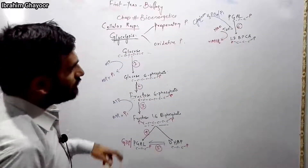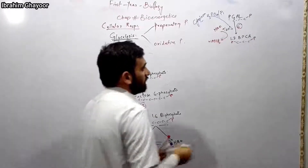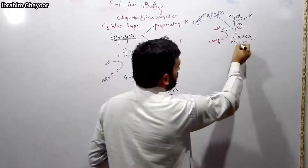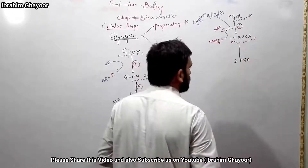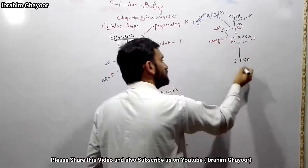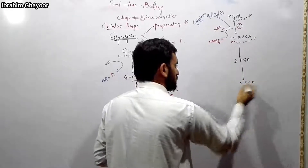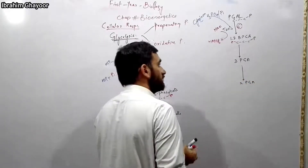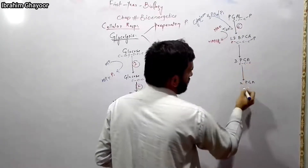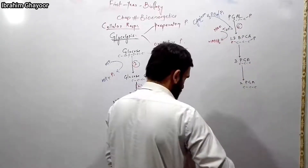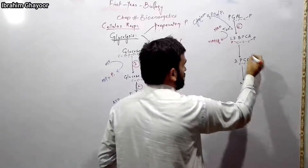The product formed is 1,3-bisphosphoglycerate (1,3-BPG). Two molecules of 1,3-BPG are produced. This compound then participates in ATP synthesis in the subsequent steps.